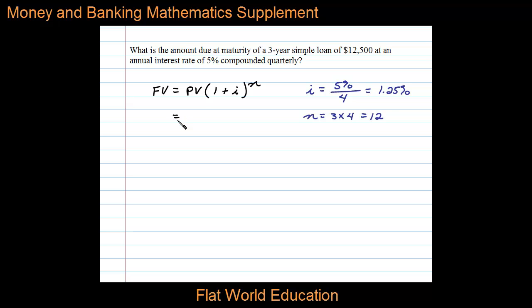Now we're ready to substitute. The present value is the amount of the loan, $12,500 times 1 plus i. In this case, 1.25% decimalized is 0.0125 and we're going to raise that to the 12th power.